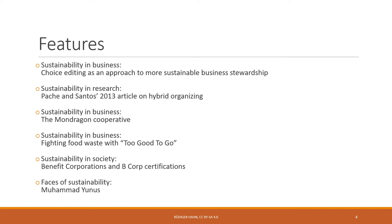As always, the chapter comes with quite a few features. We have a sustainability in business feature about choice editing as an approach to more sustainable business stewardship — where companies limit the choices of their customers on purpose. We also discuss the sustainability research article by Battilana and Santos, their AMJ article from 2013 on hybrid organizing.